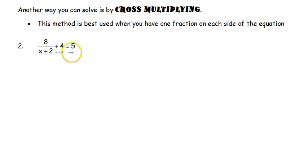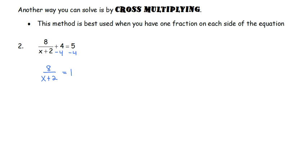Sometimes you don't want to overlook the obvious — I can easily move that 4 over and be left with 8 over x plus 2 equals 1. You can use the LCD method or cross-multiplying in any equation; there's always just a suggestion. If you're using the LCD method, regardless of how many terms, you need the least common denominator. If you're using cross-multiplying, you have to get one fraction on the left and one fraction on the right.